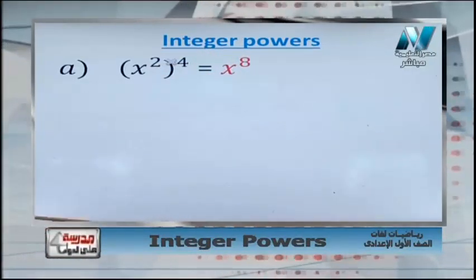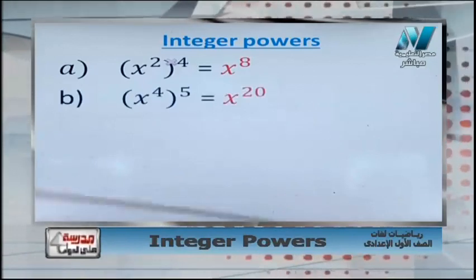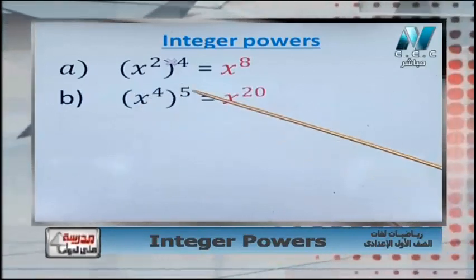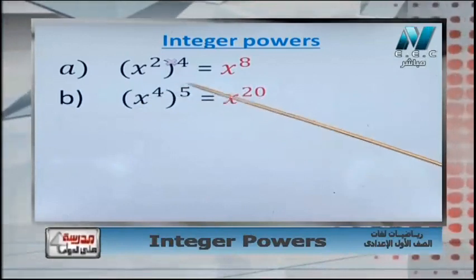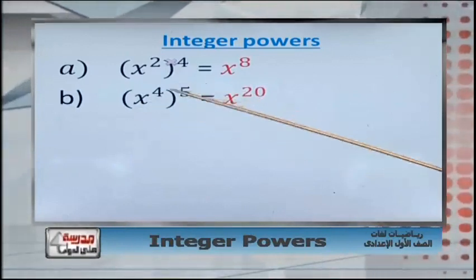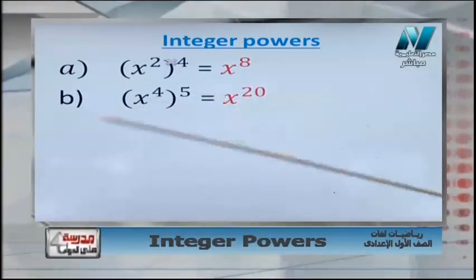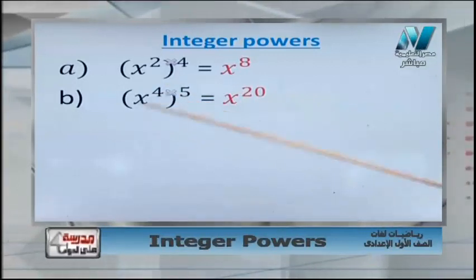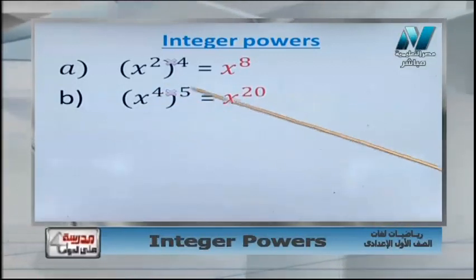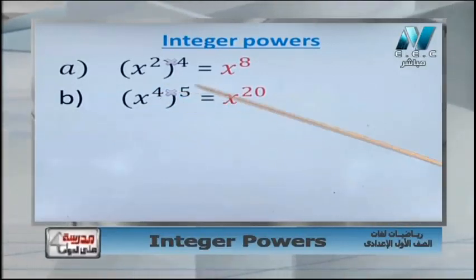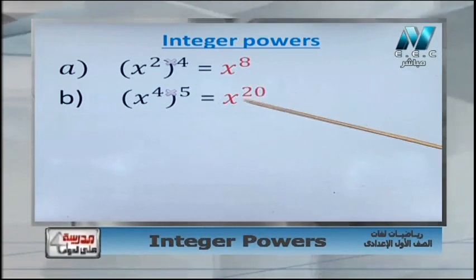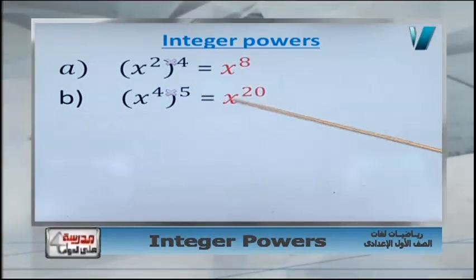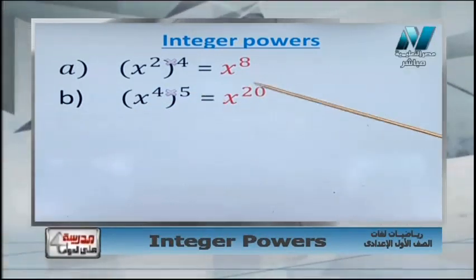Another one: x power 4, all to the power 5. x has two powers: power 4 and power 5. Power of the power — we multiply them. 4 times 5 equals 20. So x power 4, all power 5, equals x power 20.